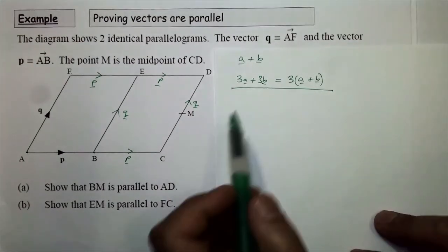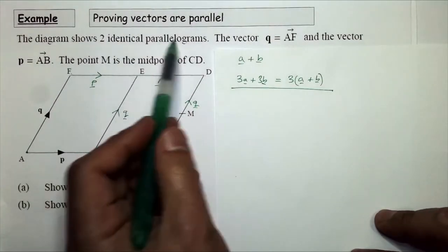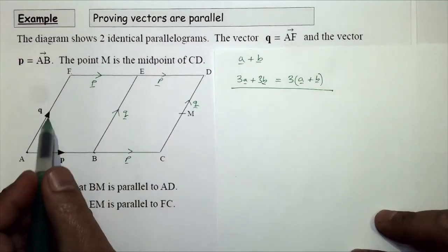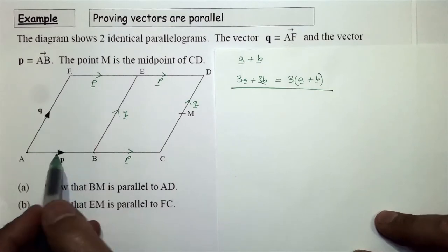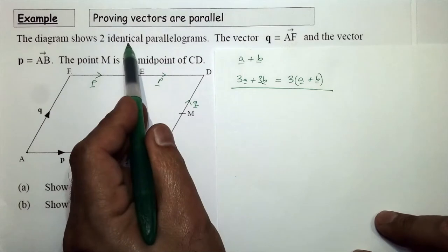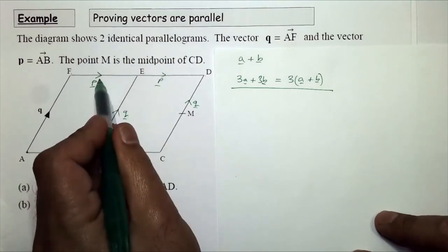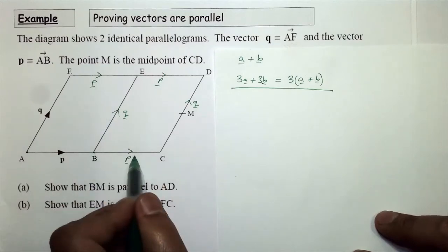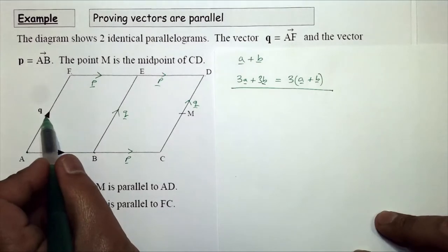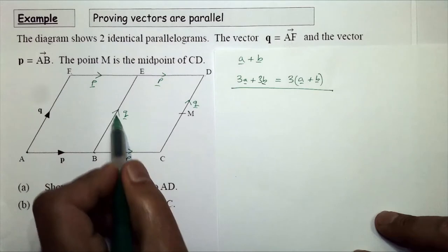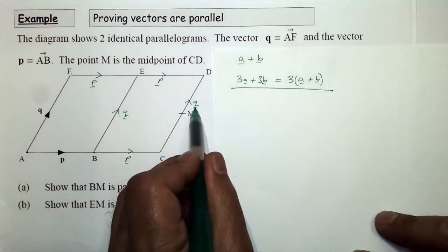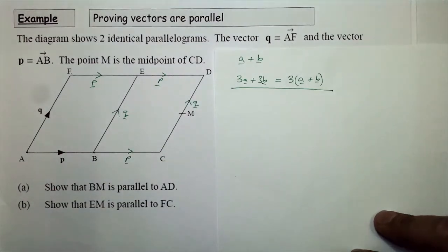In this example, we've got two identical parallelograms. We're told that the vector from A to B is p, and A to F is q. Because the parallelograms are both identical, this side will also be vector p, as will the corresponding side. That vector is also q, and C to D is also vector q.